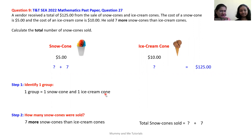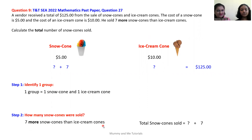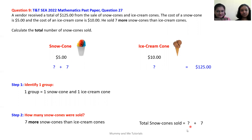Step two is to calculate how many snow cones were sold. Seven more snow cones than ice cream cones were sold. This is how we represent it: an unknown amount of snow cones, plus an additional seven.